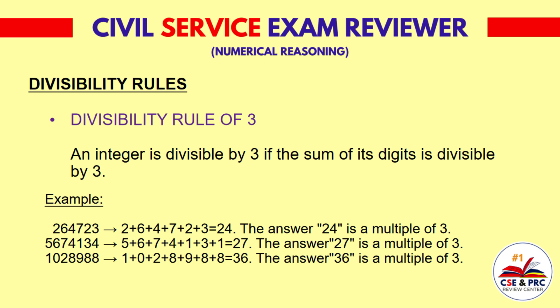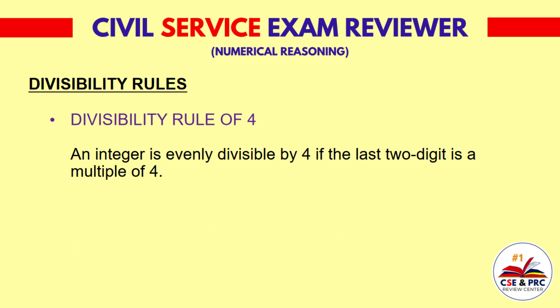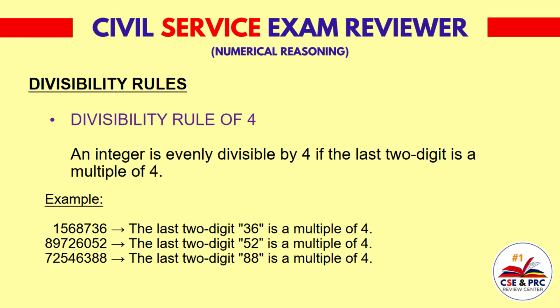The same with 1,028,988. Divisibility Rule of 4: An integer is evenly divisible by 4 if the last two digits are a multiple of 4. For example, 1,568,736 is divisible by 4 since the last two digits 36 is a multiple of 4. 89,726,052 is divisible by 4 since the last two digits 52 is a multiple of 4.